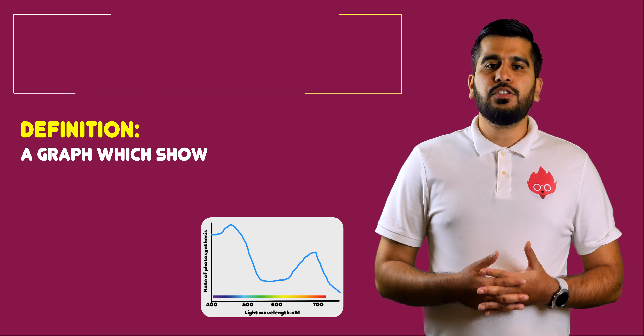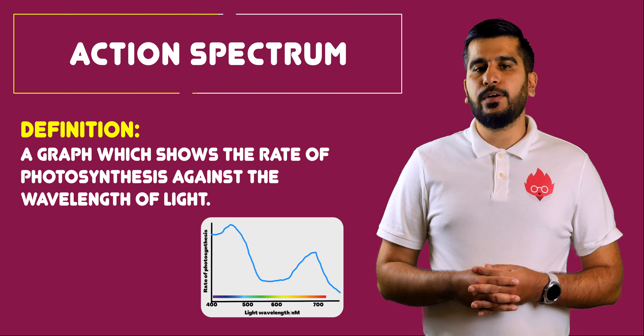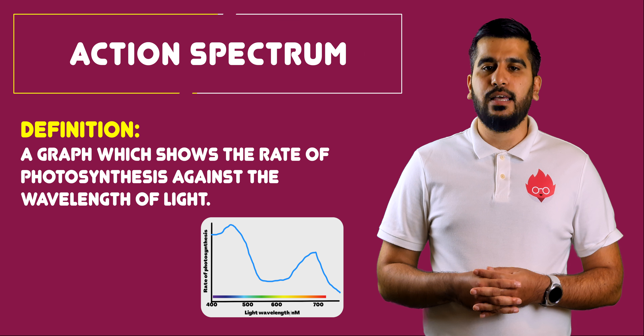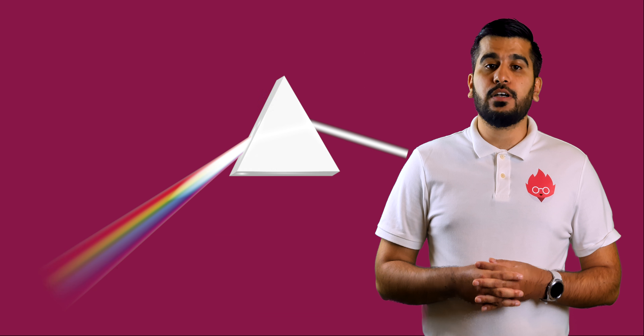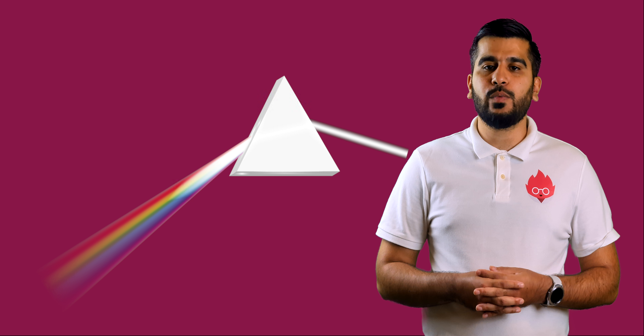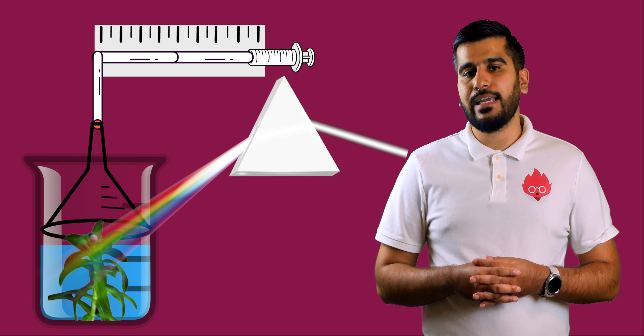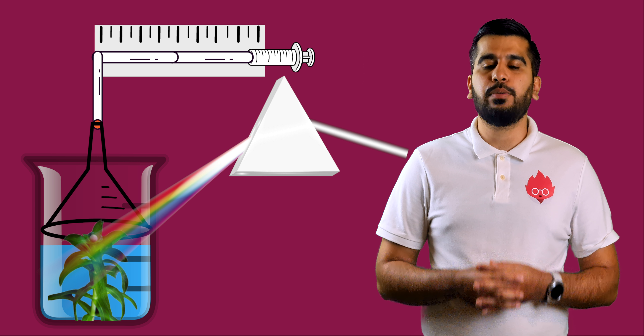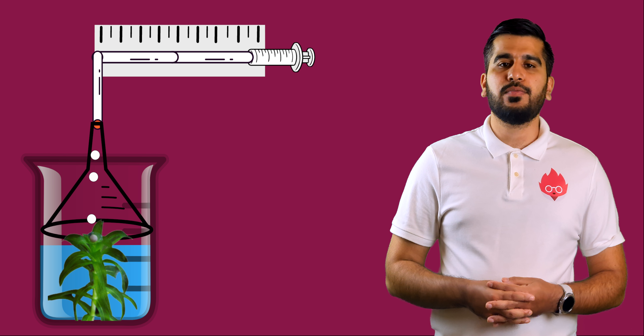The action spectrum is a graph showing the rate of photosynthesis against the wavelength of light. These action spectrums are obtained by projecting different wavelengths of light in turn for a given period of time to green pondweed. The gases produced are collected and the volume is measured. This production of oxygen gives us a measure of the rate of photosynthesis.